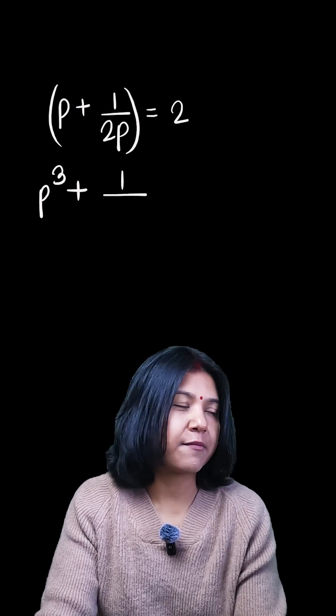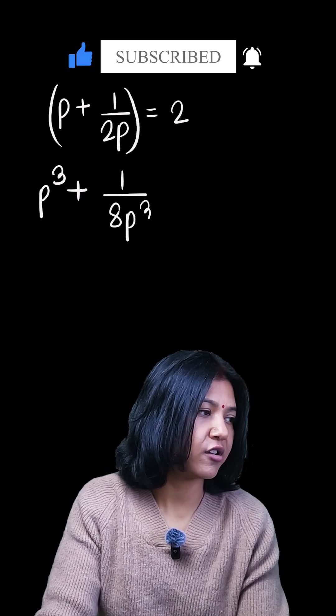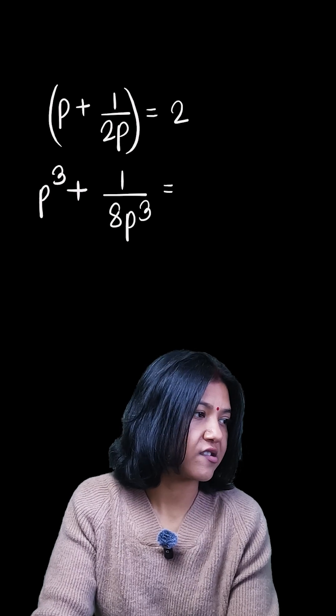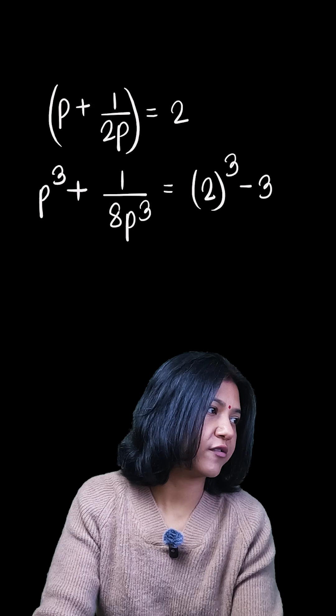So you clearly know 1/(2p), when I whole cube it, I'll have 1/(8p³). So the sum of the cubes is always equal to (a+b)³, which is just 2³ minus 3 times the product of the two.